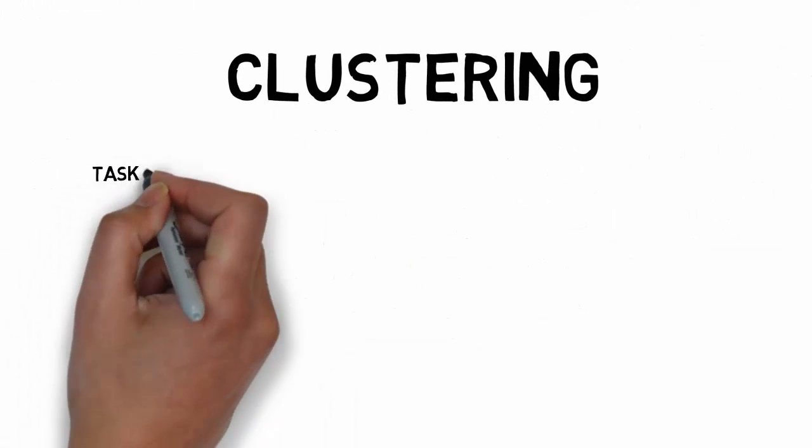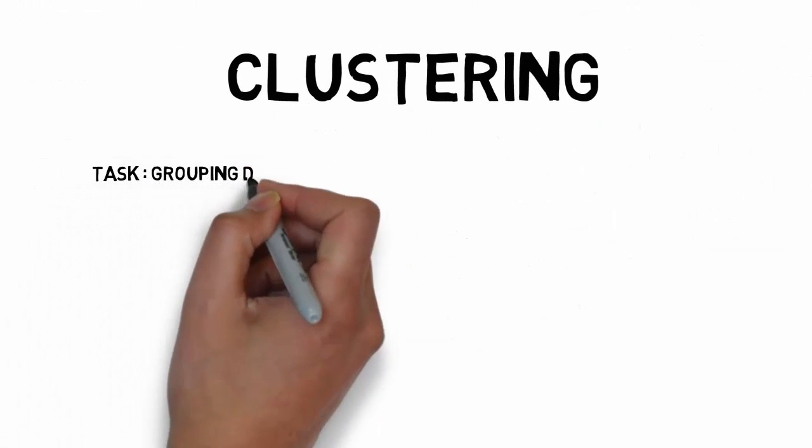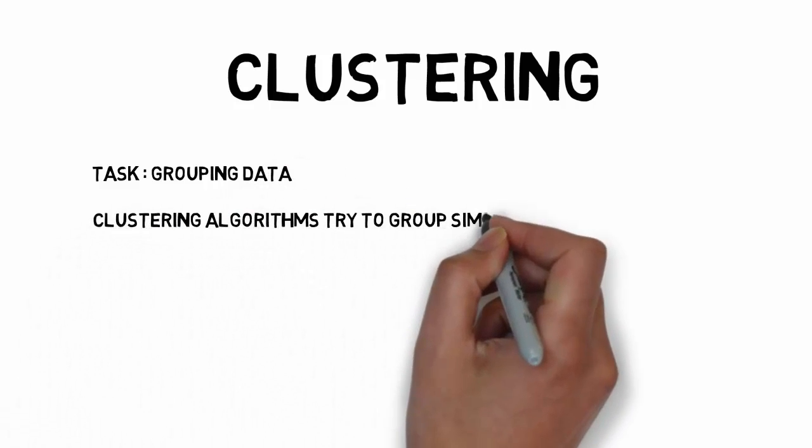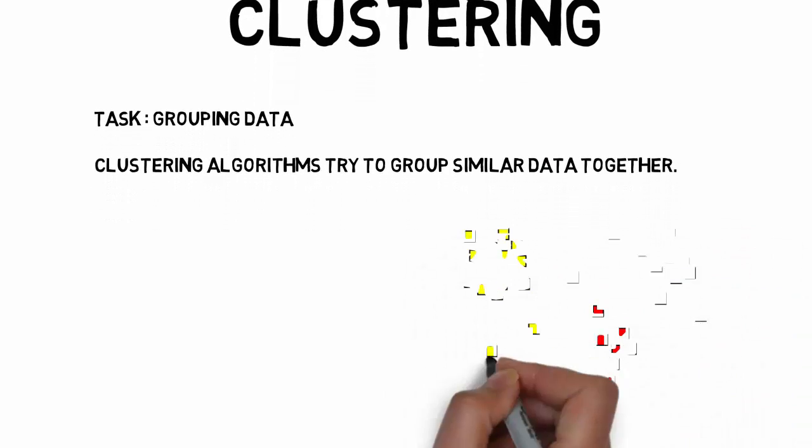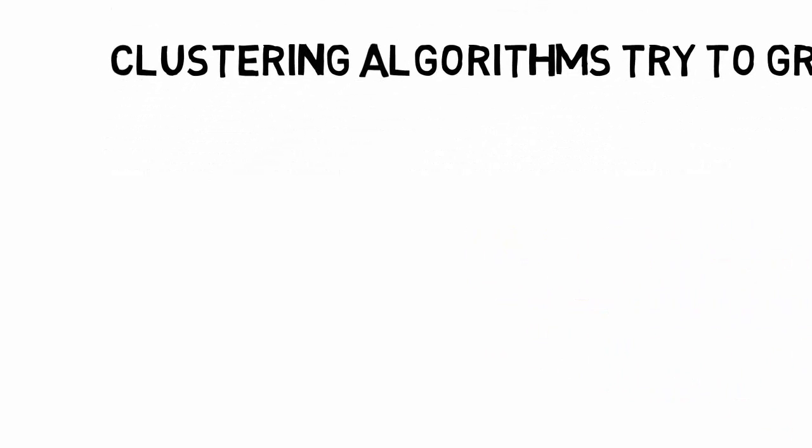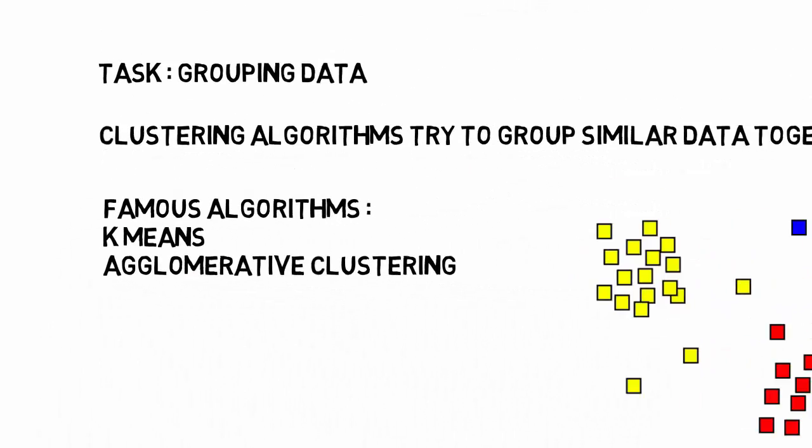If you just want to group your data without labels, it is then a clustering problem. Clustering algorithms work on grouping similar data points together based on the different definitions of similarity. Some famous algorithms are K means clustering and agglomerative clustering.